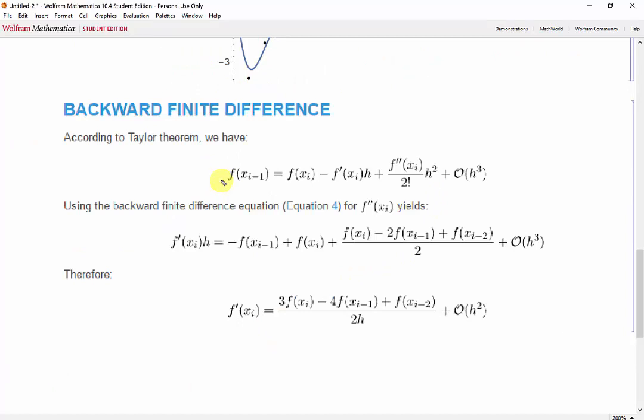Now for the backward finite difference, the method for deriving the equation is the same, with derivatives starting from the third data point, because we have an x_{i-1} and x_{i-2} term. And we also have an error that is also directly proportional to the square of the step size.